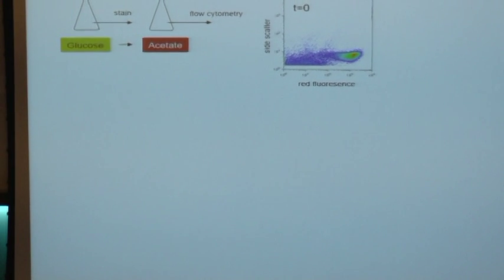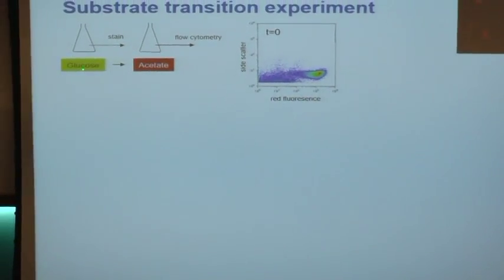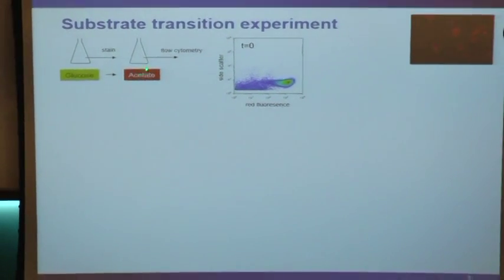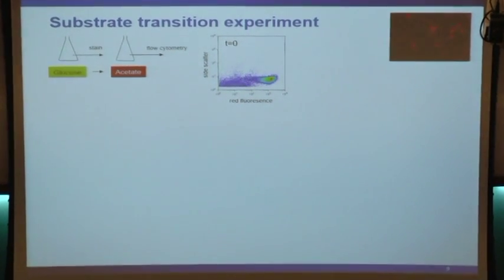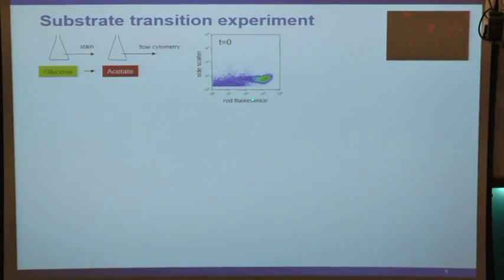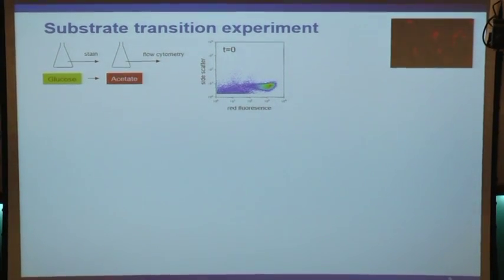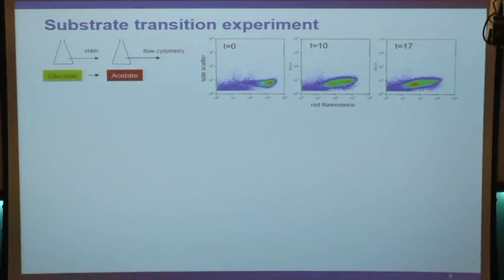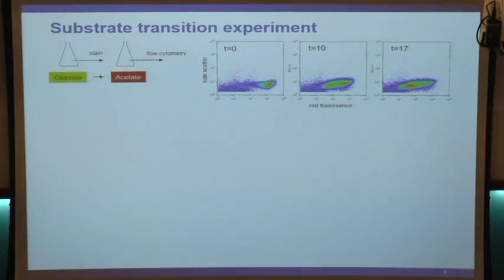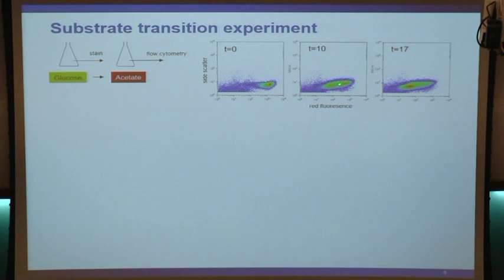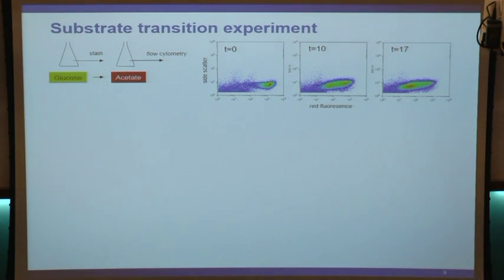Now we do the actual experiment: we took cells from glucose, stained them, put them into acetate, and performed flow cytometric analyses. Initially, cells are very bright. As time goes by - at 10 hours - what you start to see is that there are now two clouds emerging: one that still more or less has the original fluorescence, and another one that has moved to the left.